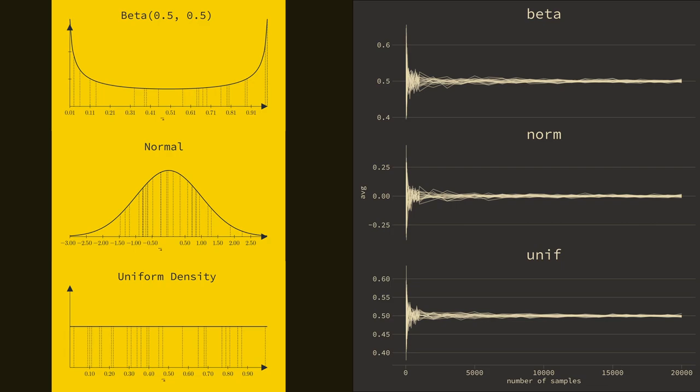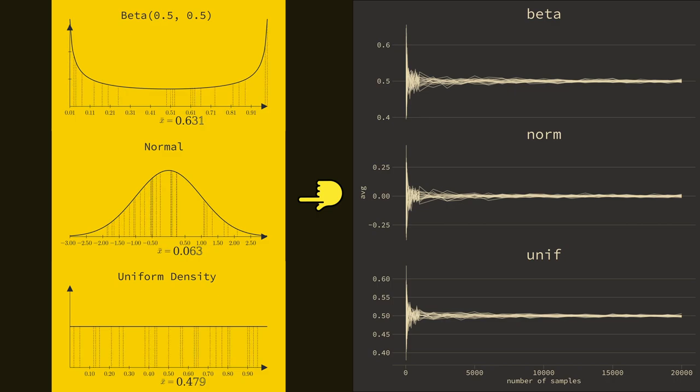I iterated 50 times for each sample size, that is why there are multiple lines. On the left, I have the shape of the distributions that generated these convergence plots.